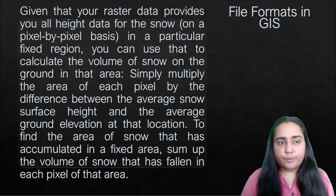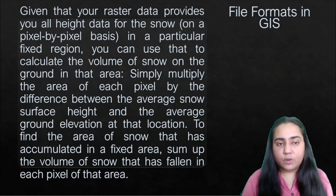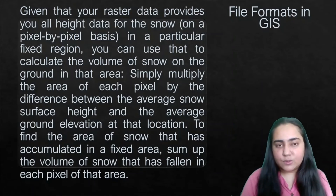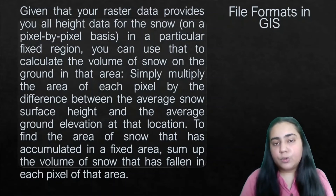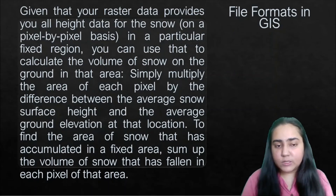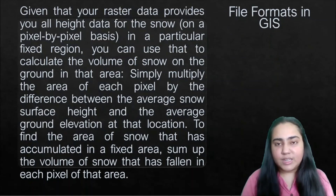Given that your raster data provides height data for snow on a pixel-by-pixel basis in a fixed region, you can calculate the volume of snow by multiplying the area of each pixel by the difference between the average snow surface height and the average ground elevation at that location. Then sum up the volume across all pixels to find total snow accumulation in that area.